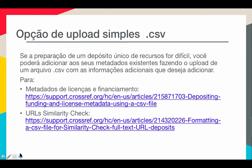Existe também a opção de upload simples via arquivo CSV, com um endereço que mostra como fazer o depósito de metadados de licenças e financiamento, e como fazer o depósito de URLs de similarity check. A URL de similarity check aponta diretamente para o documento — não necessariamente a página do artigo, mas diretamente para o conteúdo em texto completo. Pode ser em PDF, HTML ou outro formato, mas o similarity check exige que vocês depositem a URL de acesso ao texto completo.